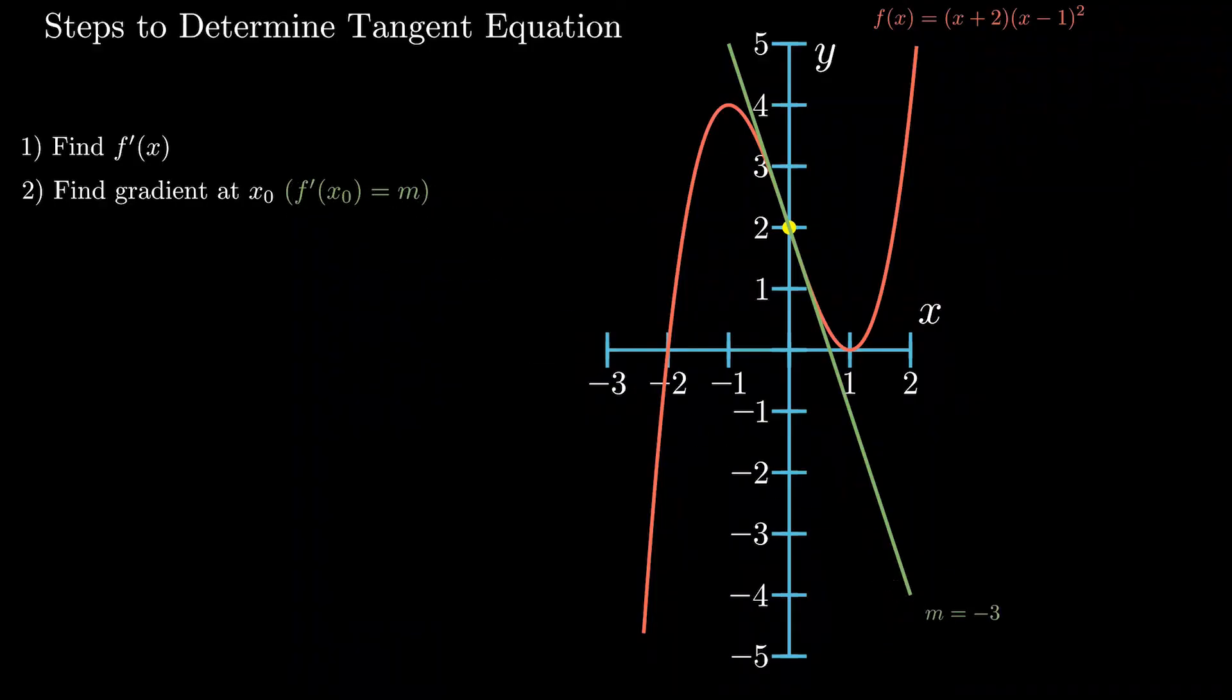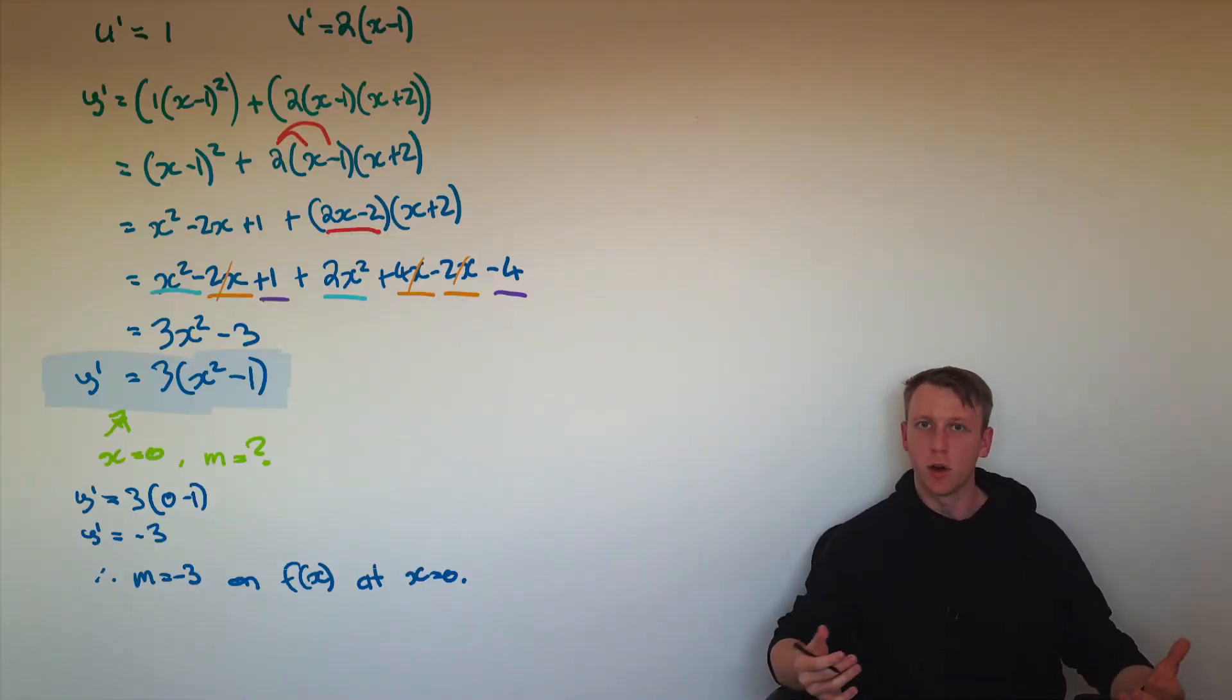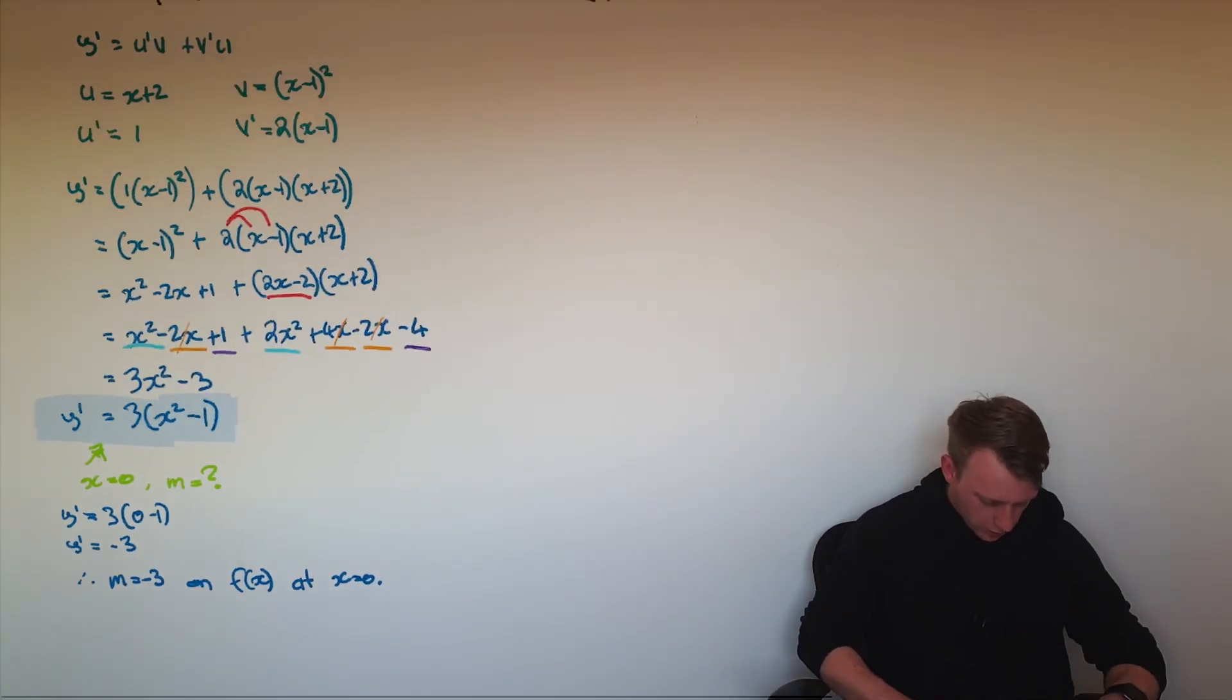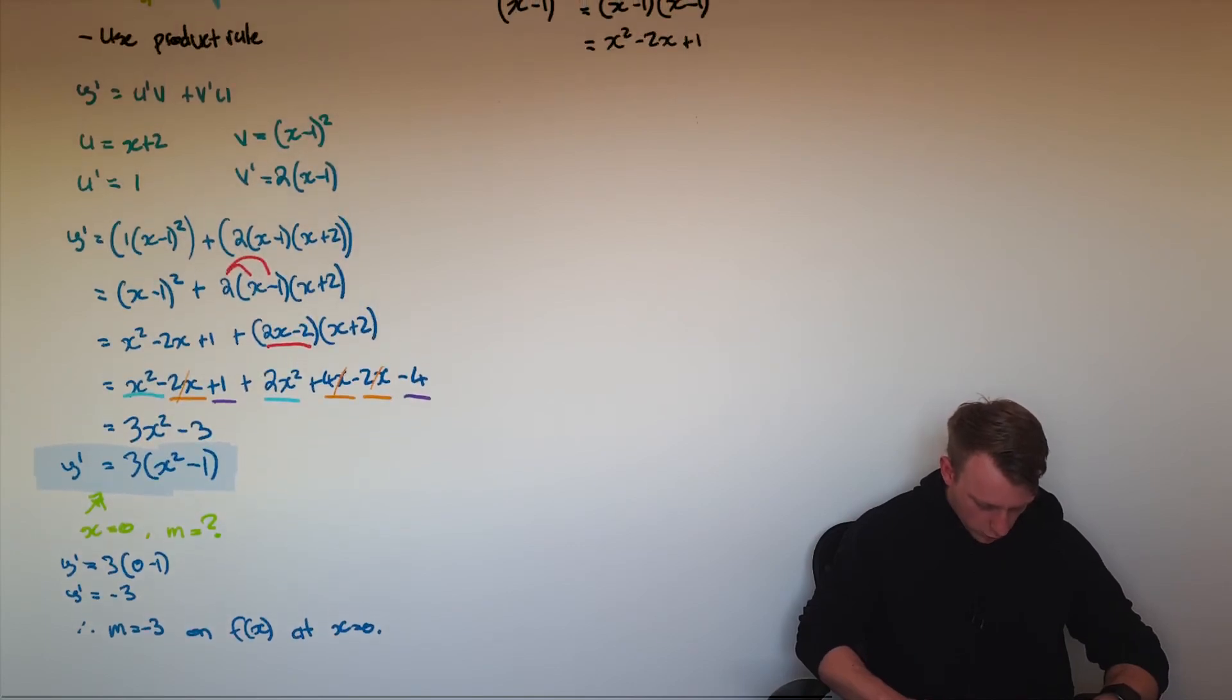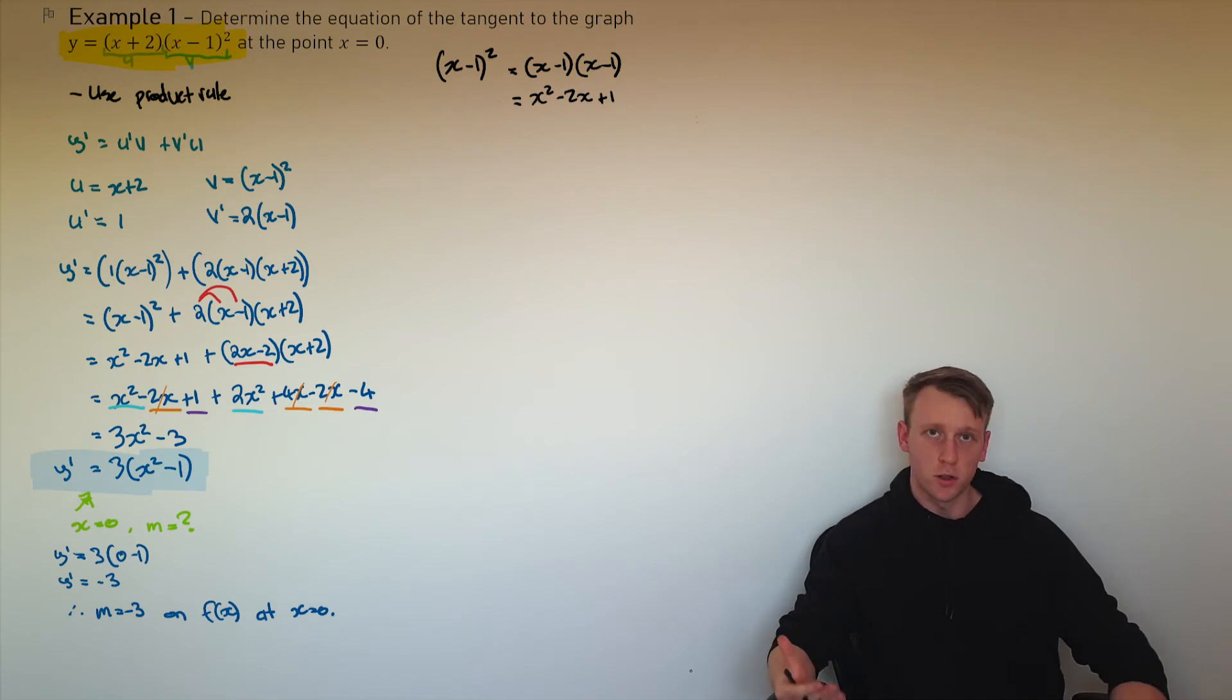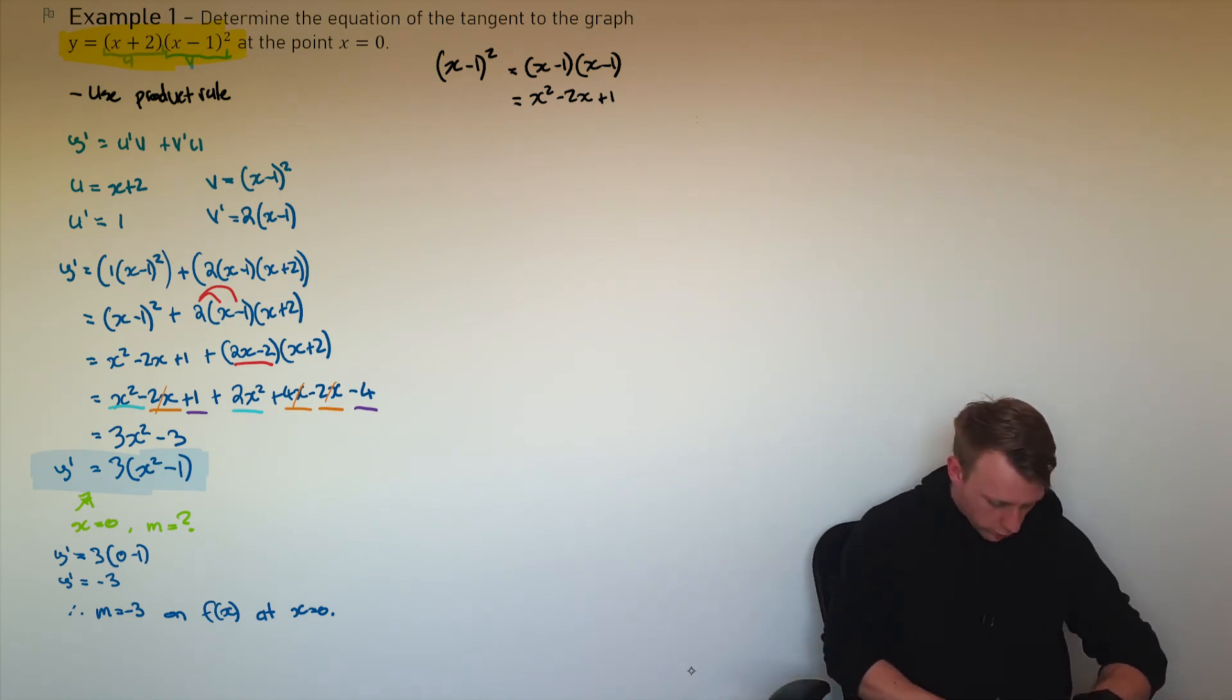Our third step is to then find what is the coordinate point at this x point of x being equal to 0. And the way that we're going to find the corresponding y value is to put that x value back into our original function to determine what the corresponding y value would be. So then we look back to our original function, which is this guy right up here. And I ask, what is the y value when x is equal to 0?